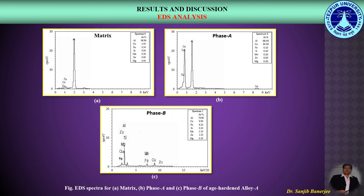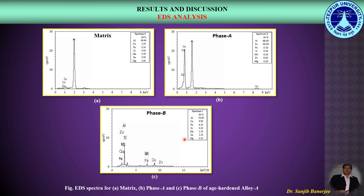EDS analysis was performed to detect the chemical composition of the different microstructural phases as observed under SEM. Here we can observe the EDS spectra for the matrix, phase A, and phase B of the age-hardened alloy A, which is the base 2219 aluminum alloy. From the EDS spectra we can observe that the matrix contains primarily aluminum. Phase A, the uniform phase along the grain boundaries, is primarily CuAl₂ or theta phase, and phase B, which has a blocky structure along the grain boundaries and triple points, is an intermetallic phase.